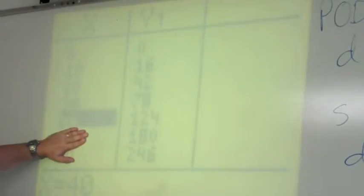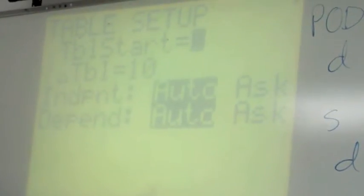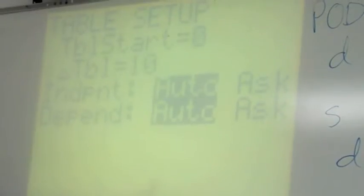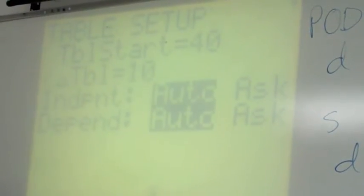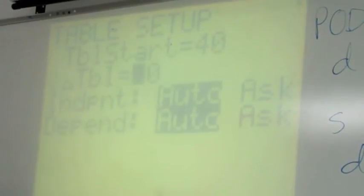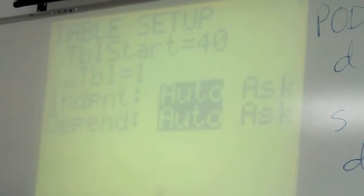This is how solving these problems using the tables becomes really powerful. Because now I know that it's somewhere near 40. And I can zoom into it by going back to my table settings. And for table start, I'm going to make it 40. And I went up by 10 miles an hour at a time. Now I'm going to make it 1 mile an hour.